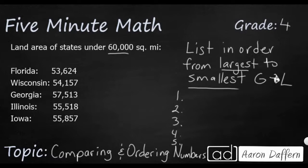First, we need to make sure all of our numbers go to the same place value. They all have five digits, which means they all go to the ten-thousands place. If they didn't, that would immediately tell us which is the largest or smallest. But they all go to the same spot, and they all have a five in the ten-thousands place, so we can't use that digit to compare.